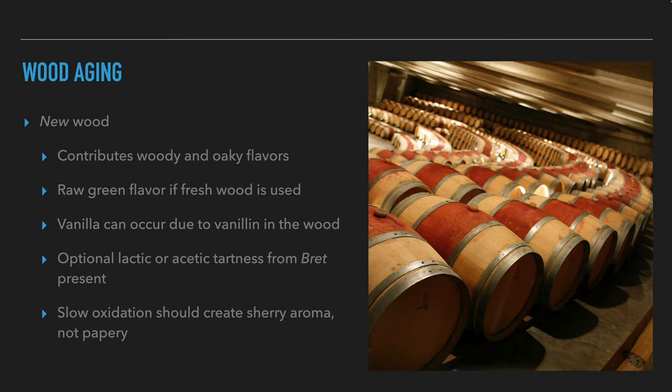Flavors added to beer aged in new wood include wood and oak flavors plus a raw green flavor. Vanilla can appear from vanillin found in the wood. If there was acetic or lactic bacteria in the wood, acidity could appear. Since wood allows a little oxygen to pass through, oxidation flavors will be created — primarily sherry, which is excellent, or wet cardboard and paper, which is less desirable.